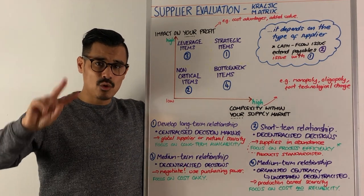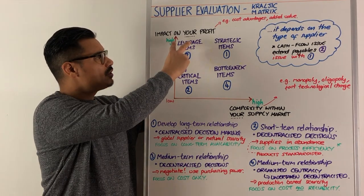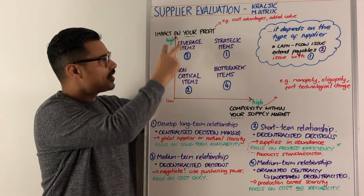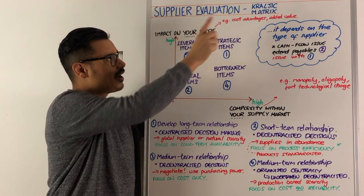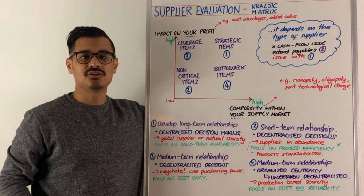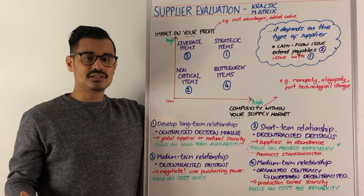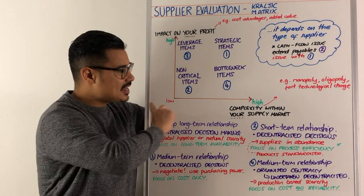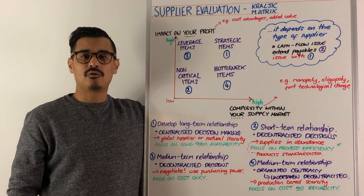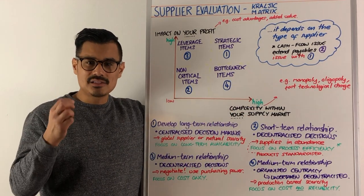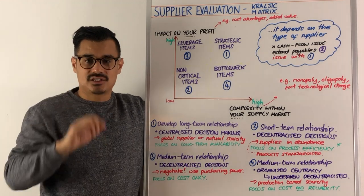According to Mr. Kraljic, there are two ways you would look at your suppliers. First, you look at the impact they have on your profit — does your supplier give you cost advantages or added value? The other axis is the market that your supplier operates within: what is the perceived complexity for you in that supplier's market?